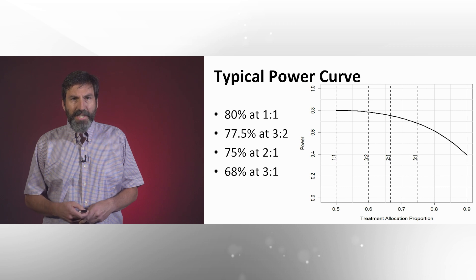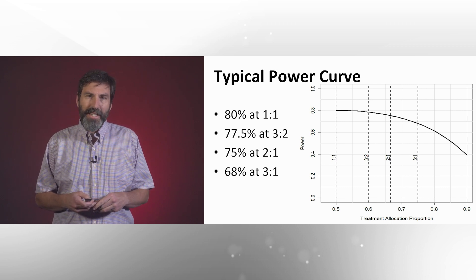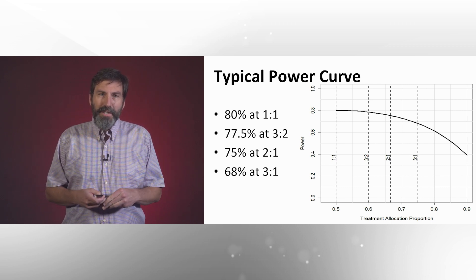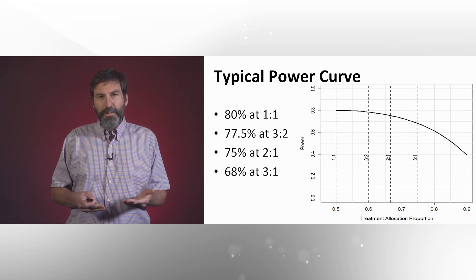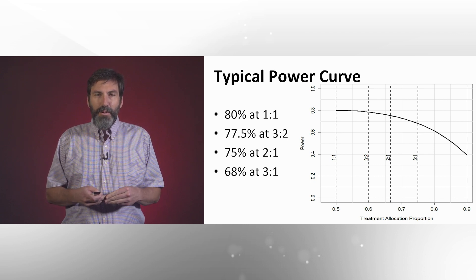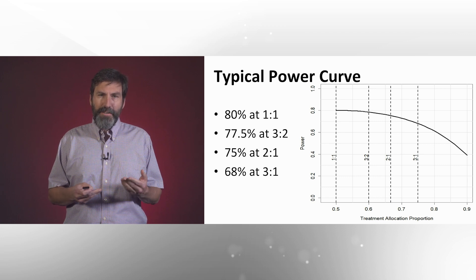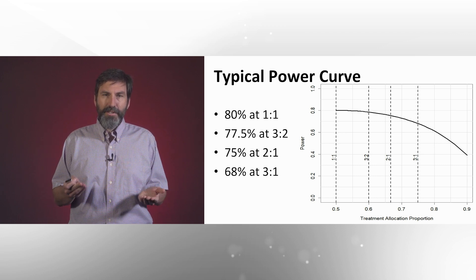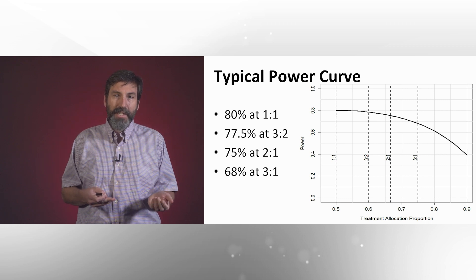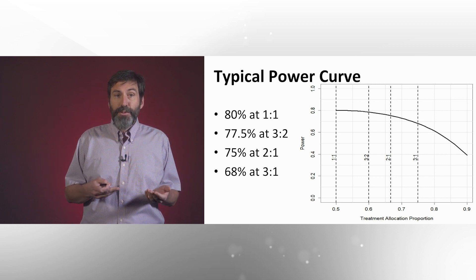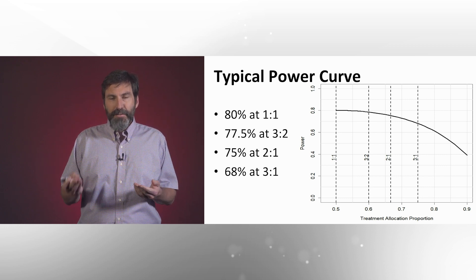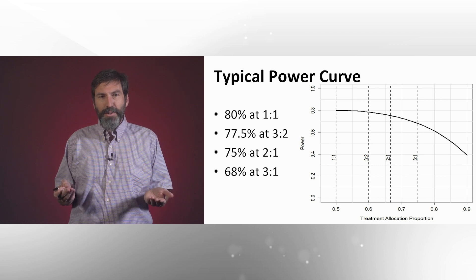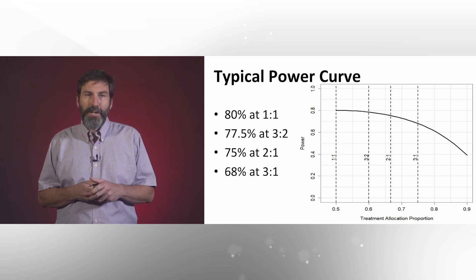What's our best chance of detecting a treatment effect if there really is a treatment effect? This is what a typical power curve is going to look like. Suppose we've designed our trial so that we've got 80% power at a one-to-one randomization ratio. What happens if we change that randomization? Instead of putting 50% of patients on treatment and 50% on control, suppose we adjust to a three-to-two randomization — so 60% allocation to the treatment arm.